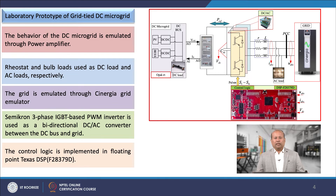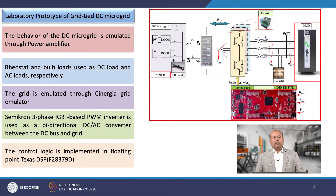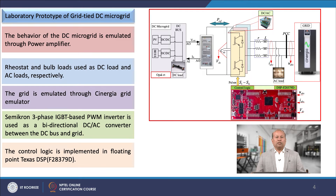The behavior of the AC grid is mimicked through a Synergia programmable grid emulator. A Semikron three-phase IGBT-based PWM inverter is used as a bidirectional DC-AC converter between the DC bus and the grid. The control logic shown in the previous slide is implemented in the DSP controller — the floating point Texas C2000 DSP controller of the TMS320F28379D Delfino type.